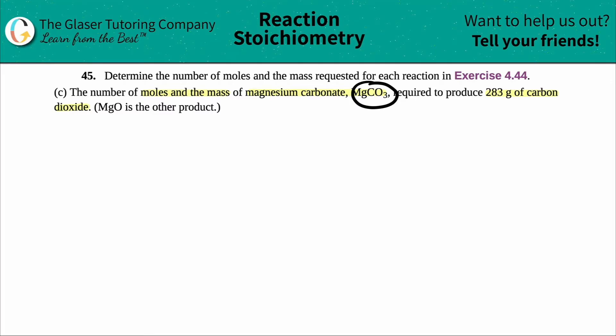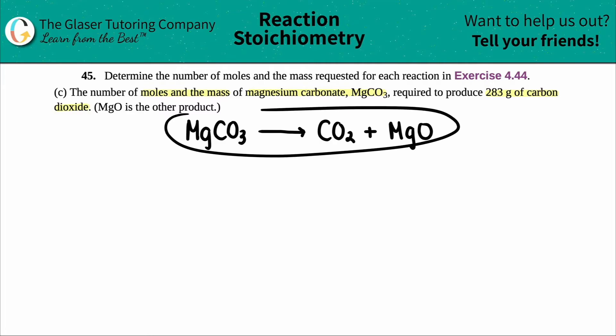Let's see, they wanted to find the moles and mass of magnesium carbonate required to produce carbon dioxide and MgO as the other product. So it looks like magnesium carbonate is my reactant. MgCO3 is used to produce carbon dioxide, which we know is CO2, and MgO. All the elements are accounted for. As I'm looking at this right now, everything is balanced, so I don't have to put any coefficients here.